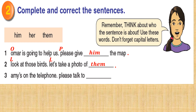Number 3: Amy is on the telephone — please talk to her. Start Amy with capital A. Amy is on the telephone. Full stop. Start the second sentence with a capital letter — Please. We are talking about Amy — Amy is a girl — please talk to her. Put a full stop at the end. Make sure that you answered correctly.